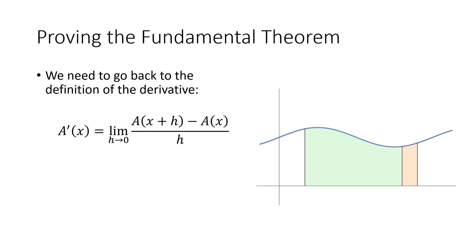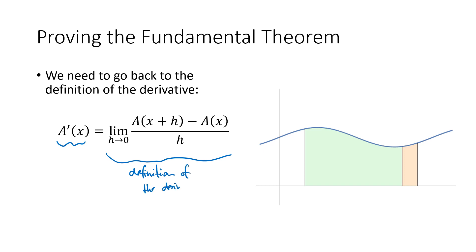So why is the fundamental theorem true? We need to go back to the definition of the derivative. We don't really have a formula for what this area function is. If we know what the specific function f of x is, then we can derive a formula — we've been doing that in some of the practice problems. But when we're trying to think of this theorem in general, why is it generally true that area functions are antiderivatives of our original function? We need to think about what a prime of x is — that's the definition of the derivative.